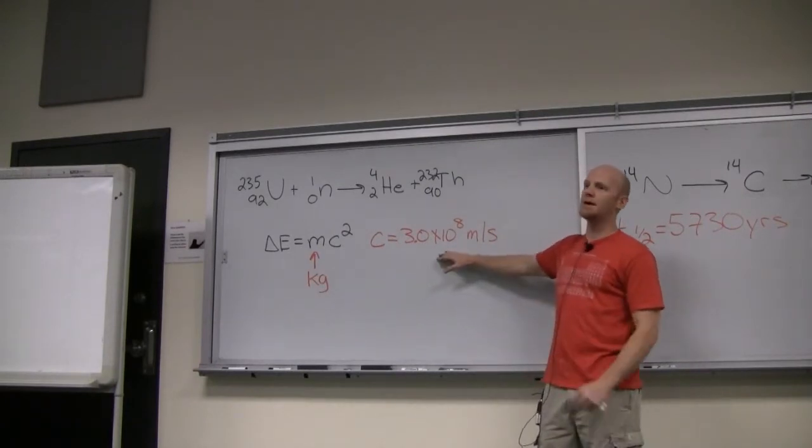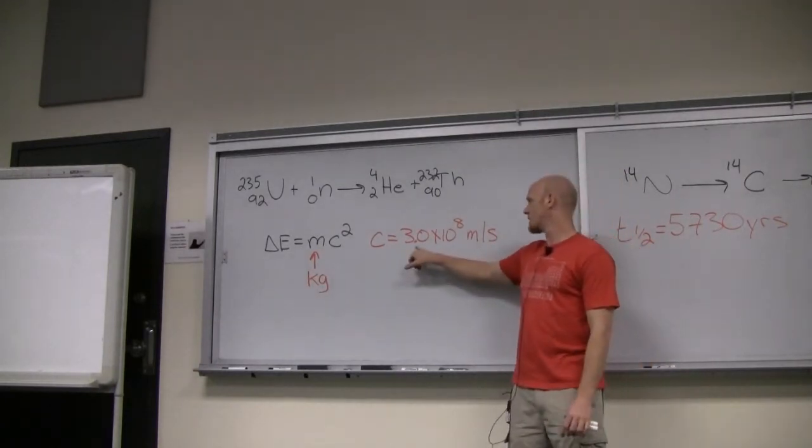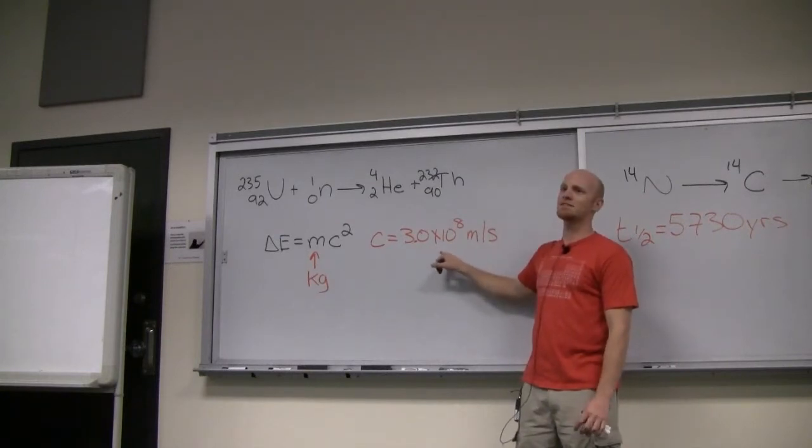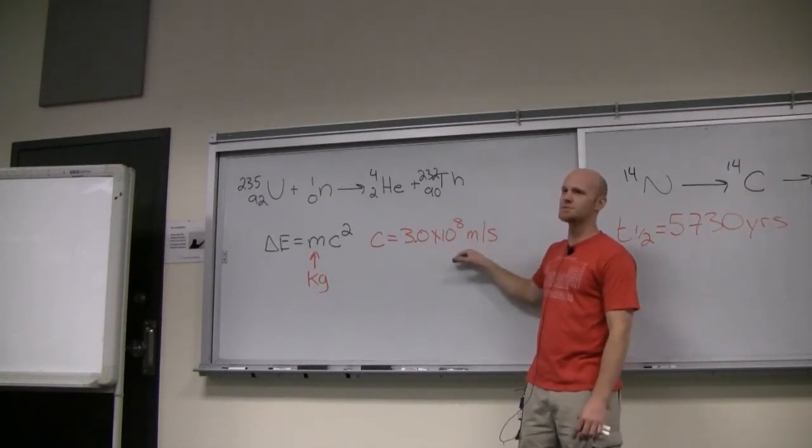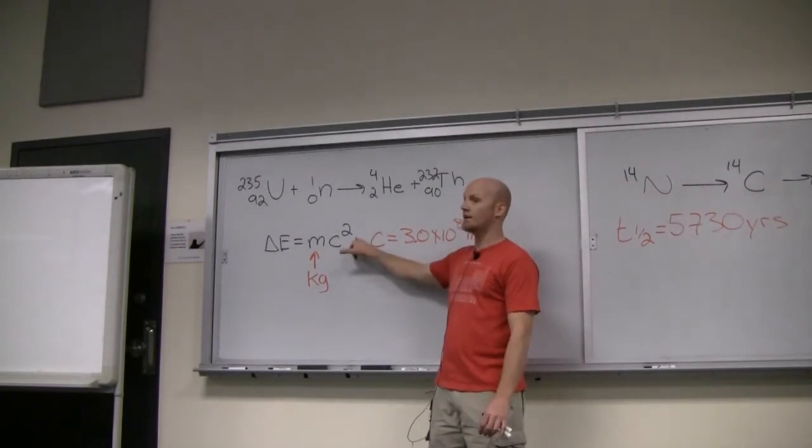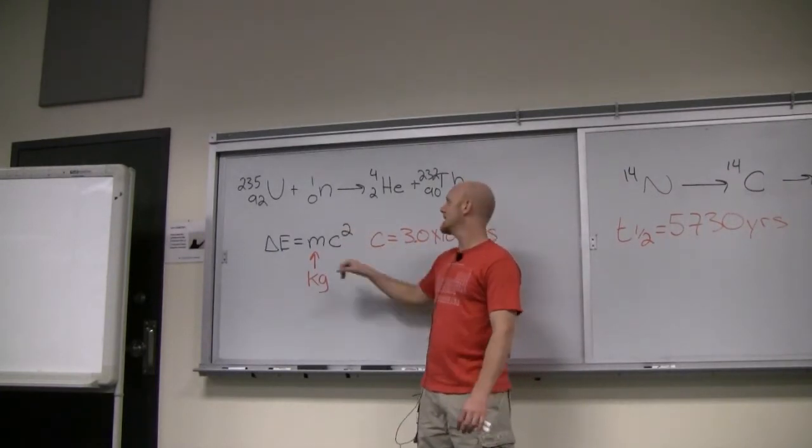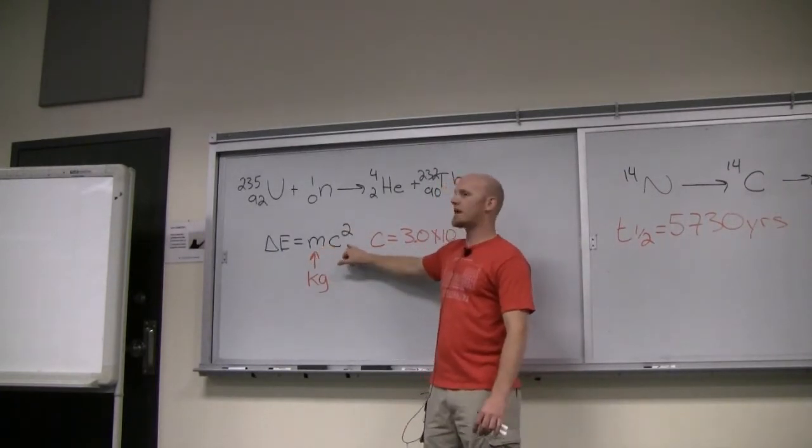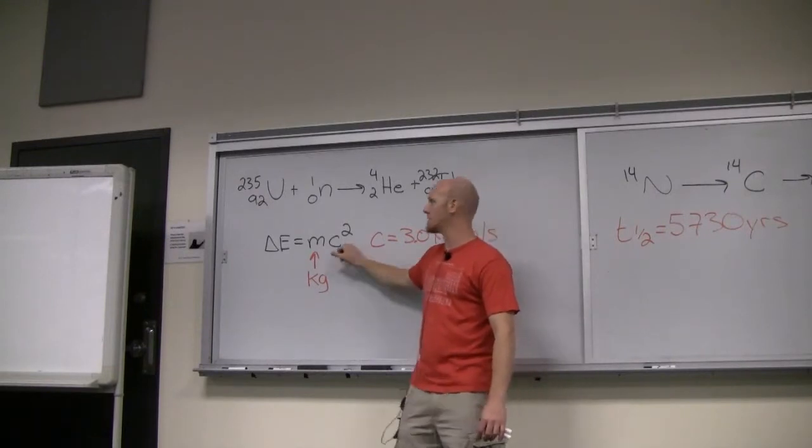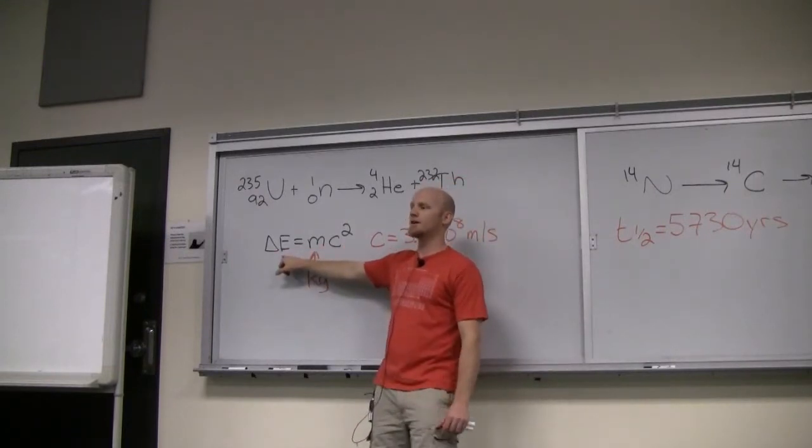So the speed of light is a big number. Notice 3 times 10 to the 8th. That's 300 million meters per second. And you square it as part of the calculation. And so a little mass, by the time you multiply by that big number squared, turns into a huge amount of energy.